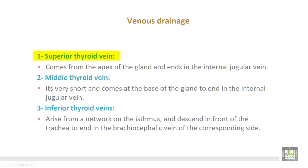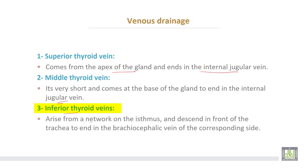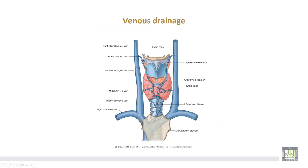Venous drainage: the superior thyroid vein comes from the apex of the gland and ends in the internal jugular vein. The middle thyroid vein is very short, comes from the base of the gland, and ends in the internal jugular vein. The inferior thyroid veins arise from a network in the isthmus and pass in front of the trachea to end in the brachiocephalic vein of the corresponding side.